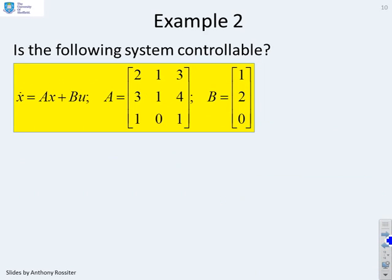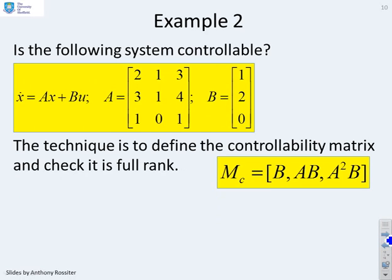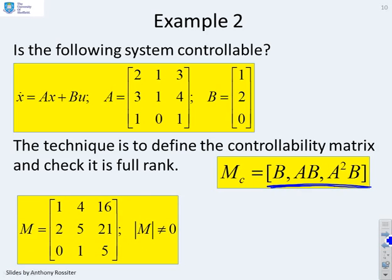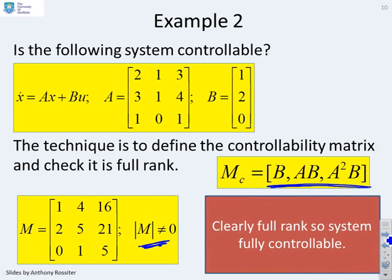Example 2. Is the following system controllable? Well, again, we use exactly the same theorem. So you see, this time M_c has got three terms because n is 3. I've got B, AB and A²B. So I simply calculate those. There's the answer. You can see what M is. And then, because this is square, I calculate the determinant. I find the determinant is not zero. So M is full rank. So the system is fully controllable.